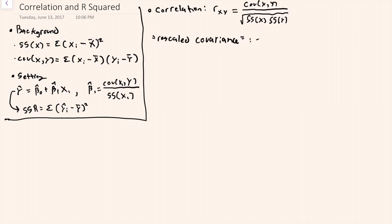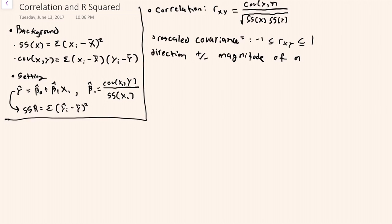Thinking of correlation as a rescaled covariance draws attention to the fact that this value is bounded below by negative one and above by positive one. In terms of interpretation, it reflects the direction - which can be positive or negative - as well as the magnitude of a linear relationship between the variables x and y.